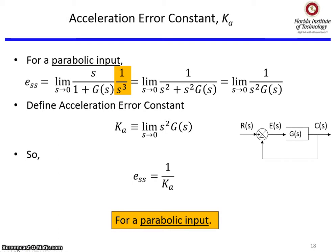We're in part two of this video because I ran into the 15-minute max time, so here we go. Our third error constant is Ka, again, for parabolic inputs.